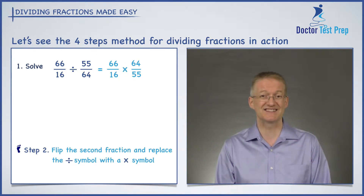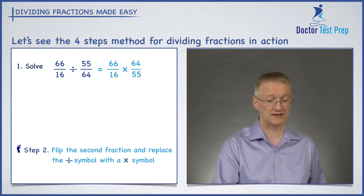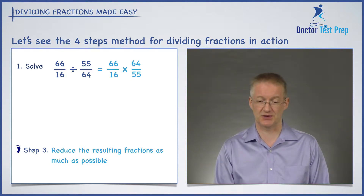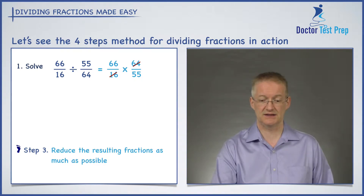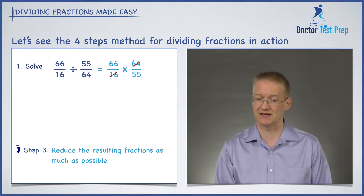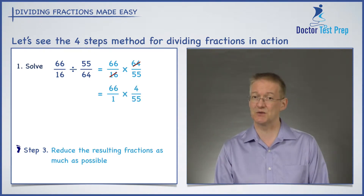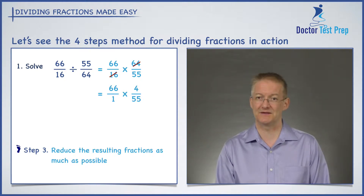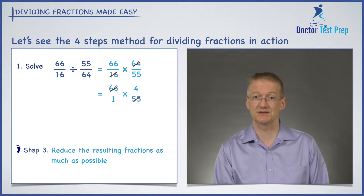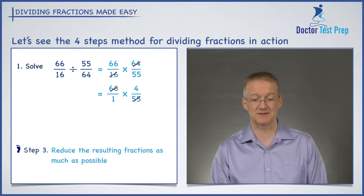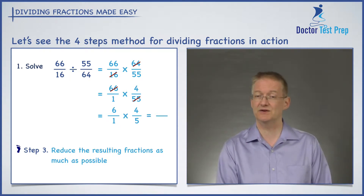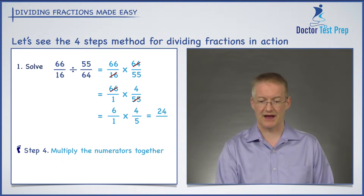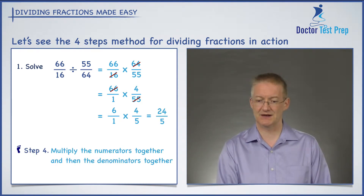Those two questions are exactly the same thing. Now we can do step number three and start to reduce this fraction as much as possible. Well, 16 and 64 do divide — 16 goes into 16 once, and 16 goes into 64 four times — leaving me with 66 over 1 times by 4 over 55. Now the 55 and the 66 will also reduce — 11 goes into both of them. 11 goes into 66 six times, 11 goes into 55 five times, so I'm left with 6 over 1 times by 4 over 5. I simply multiply those together: 4 times 6 gives me 24, and 1 times 5 gives me 5, so I'm left with 24 over 5.